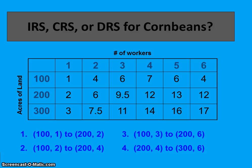There is a practice problem in your packet for the production of corn beans. The two possible inputs are the number of workers and the acres of land, and the table shows how many corn beans can be produced based on those combinations. For question one: if you're using 100 acres of land and one worker and increase inputs to 200 acres and two workers — doubling your inputs — what is the effect on output?